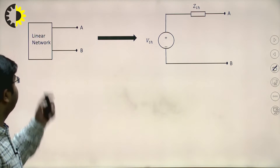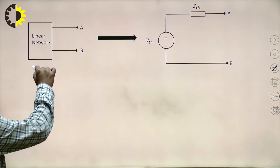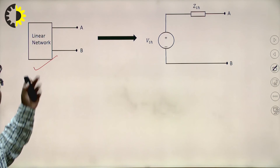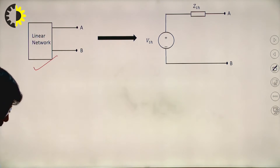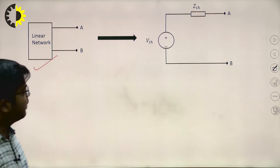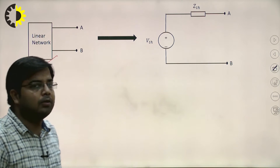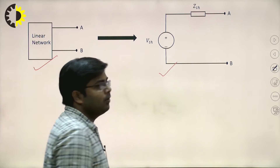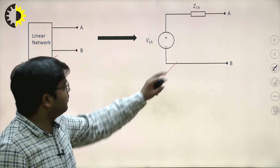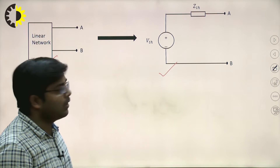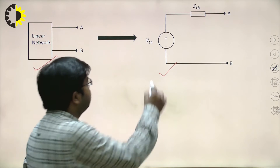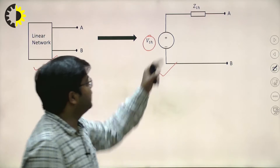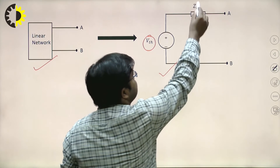This is the linear active RLC network. You can replace this network with the Thevenin's equivalent model. In the Thevenin's equivalent circuit you can see V_TH, which is the single voltage source in series with Z_TH.